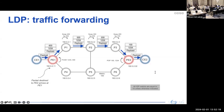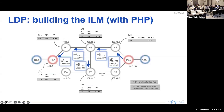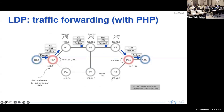When Penultimate Hop Popping (PHP) is not used, the penultimate router (P3) does not pop the label before sending to PE2. When PHP is used, P3 pops the transport label and forwards the packet with only the VPN service label to PE2. The penultimate hop is the router just before the last hop, and popping the label there avoids PE2 having to perform an additional forwarding step.